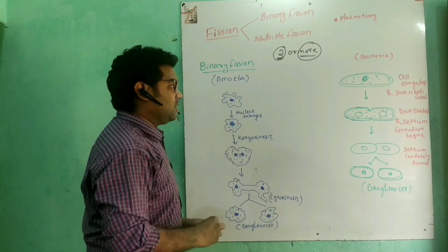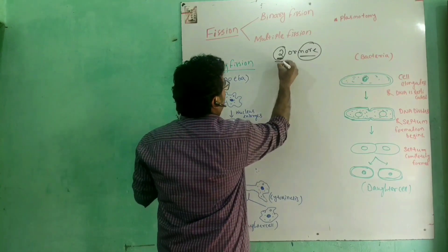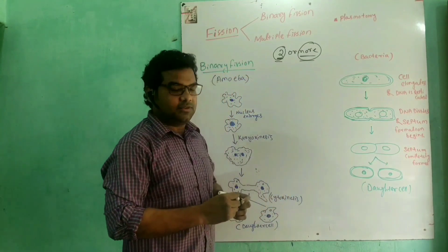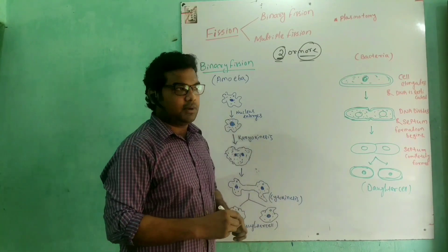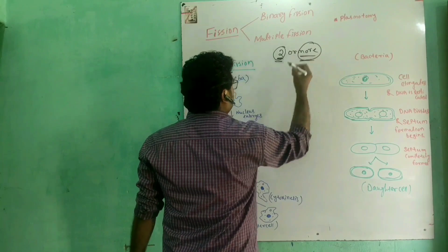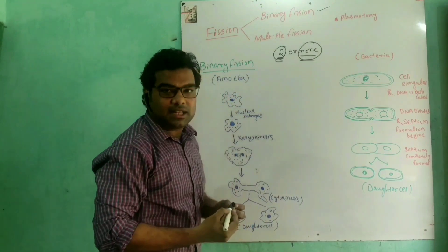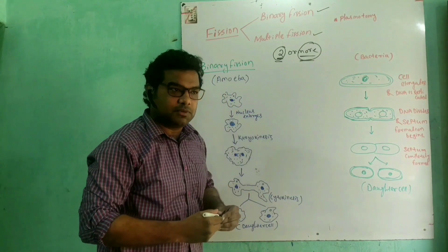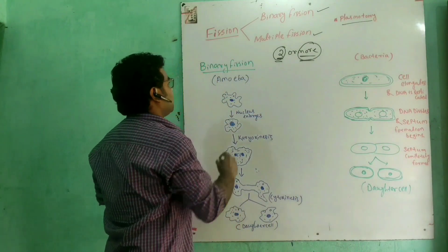Fission is the type of division in which the parent body divides into two or more daughter individuals which are identical to their parent. If the parent divides into two daughter individuals, it is called binary fission. If it divides into more than two individuals, it is called multiple fission. A division involving multinucleate cytoplasm is called plasmodomy.